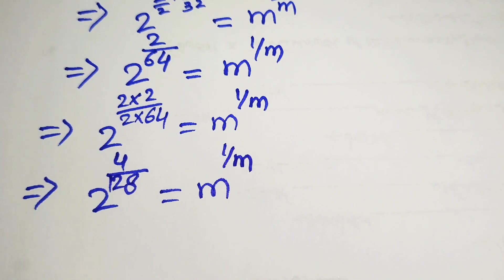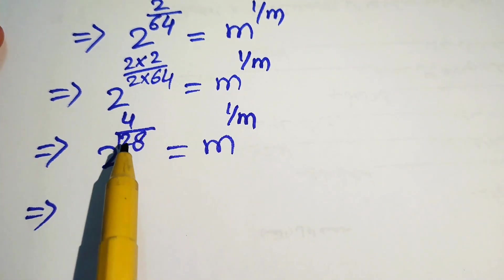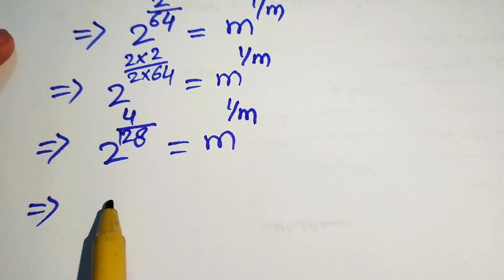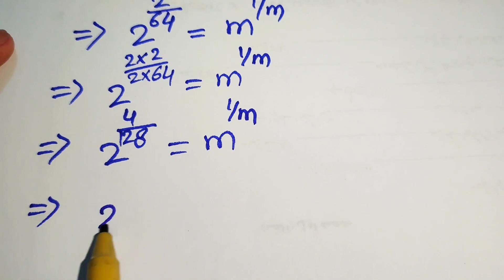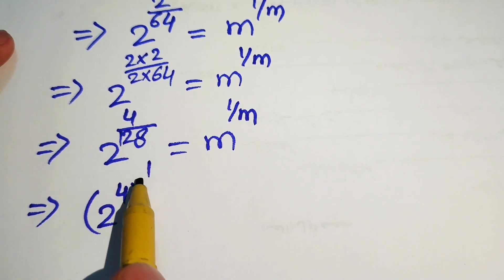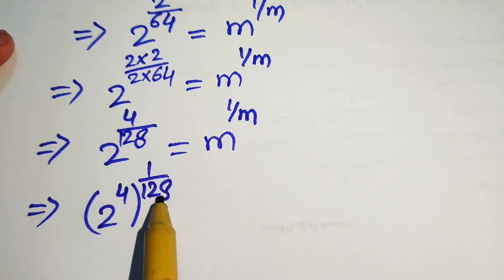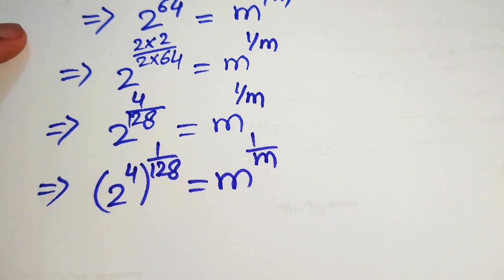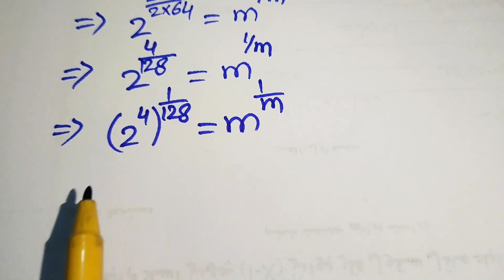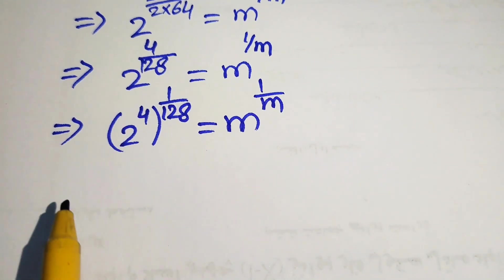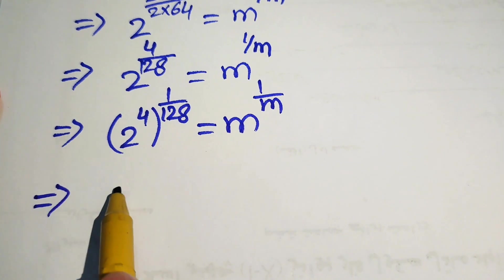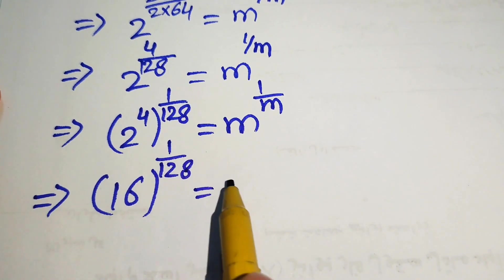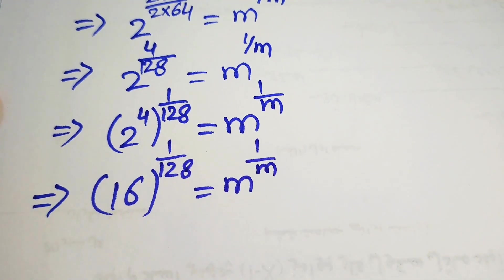We take the 4 inside the exponent and write it as 2 to the power of 4, with whole power 1 over 128. Since 2 to the power of 4 equals 16, we write it as 16 to the power of 1 over 128 equals m to the power of 1 over m.